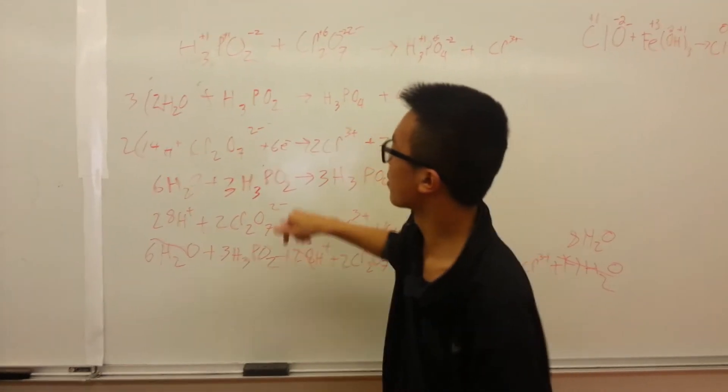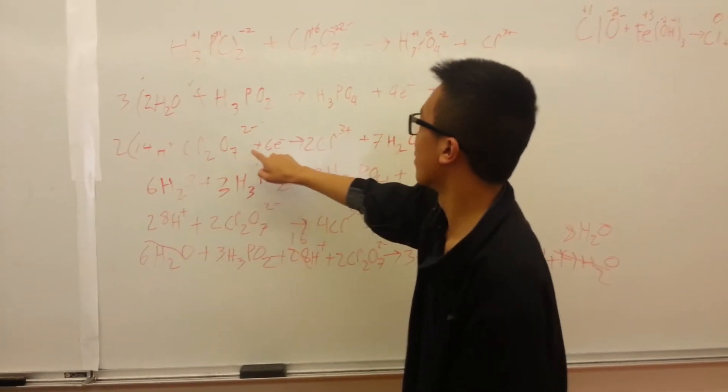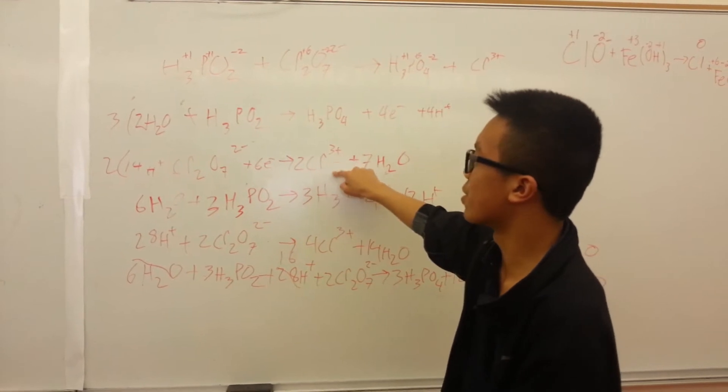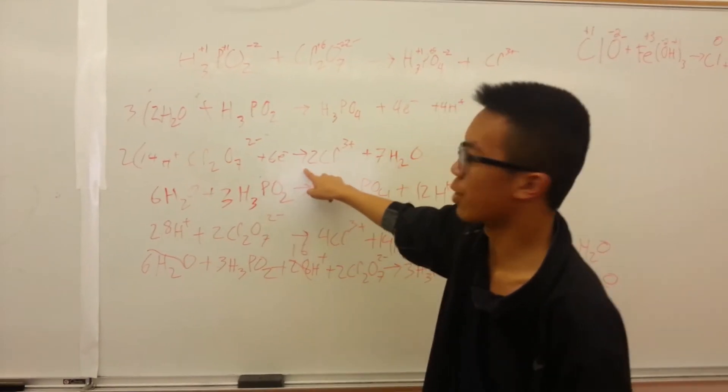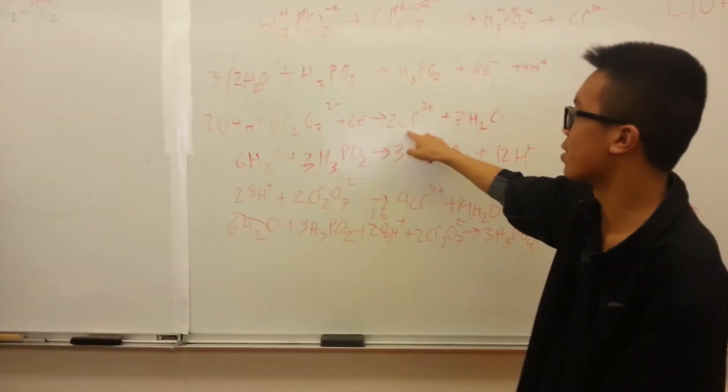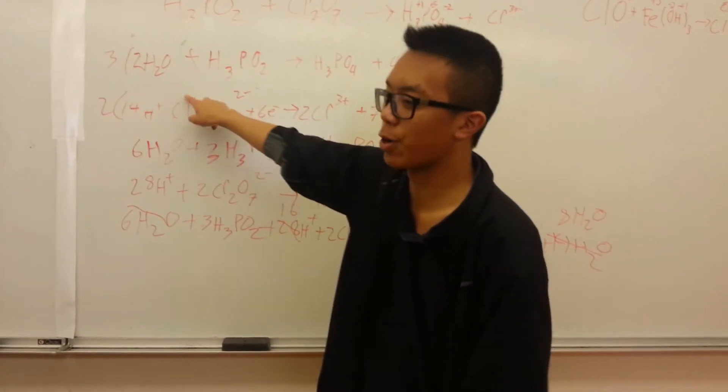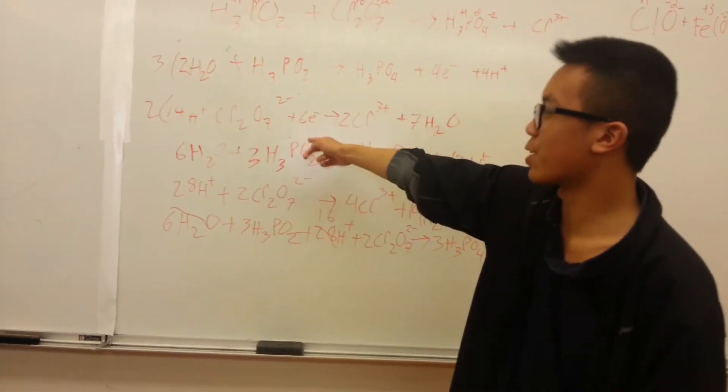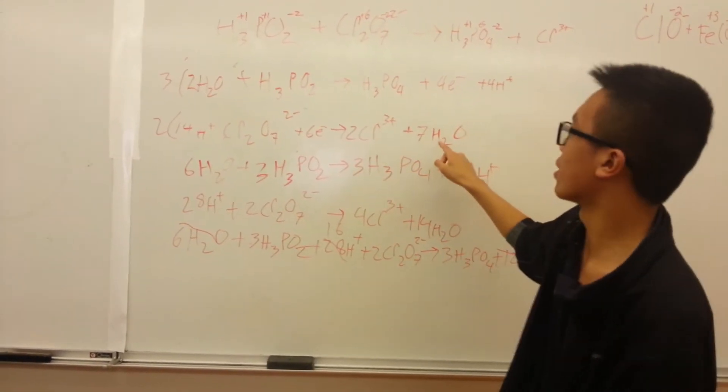We did the same thing for the second one. CR2O7 2- goes to 2CR3+. We put 6 electrons here, and we put 2 here because there's 2 CRs, so we had to balance it. This becomes 6+, and this is 12, so 12 minus 6 is 6. We had to balance out the oxygens here, so we added 7 oxygens, and then we had to balance out the oxygens so we added 14 hydrogens.